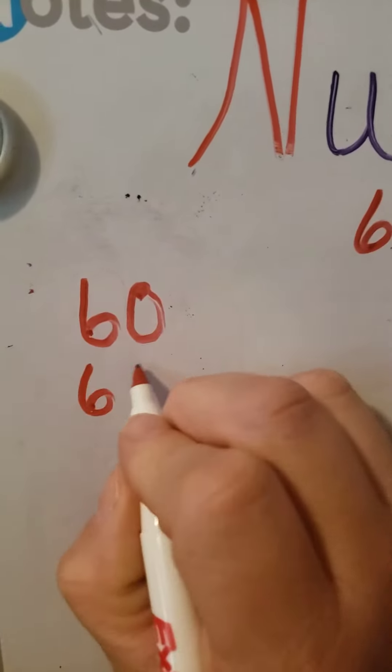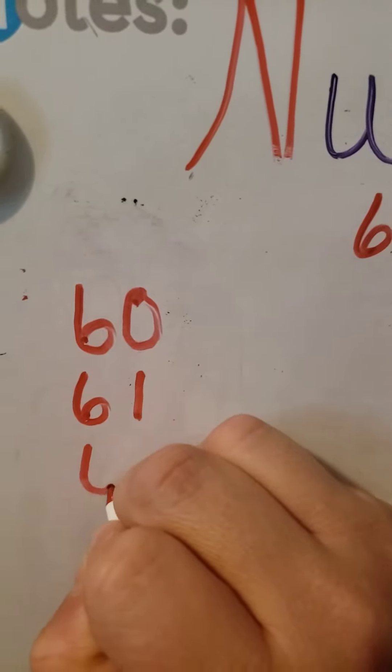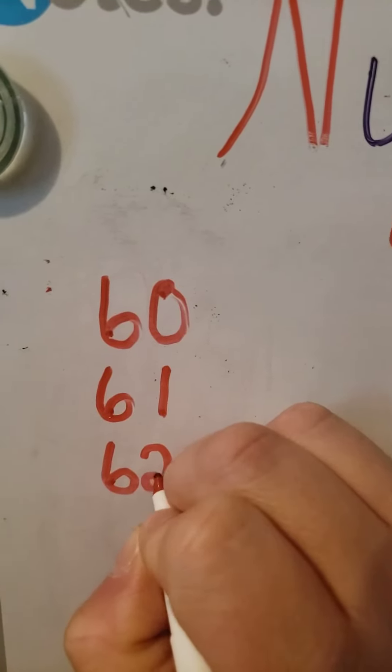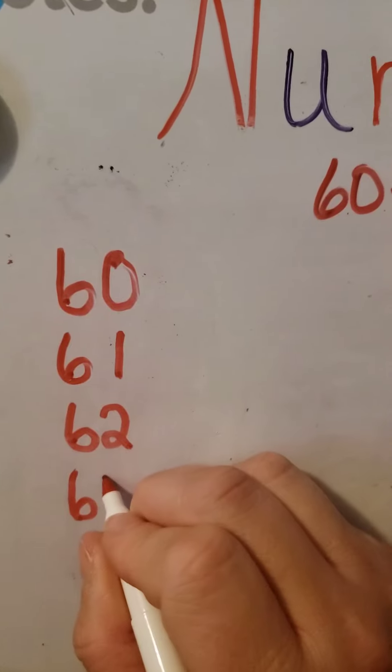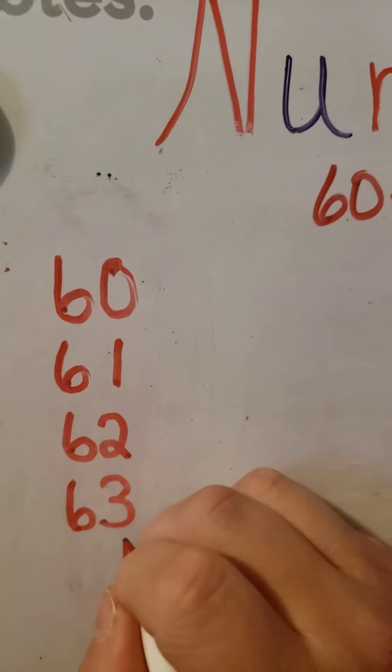61, straight line down. 62, circle at the bottom, come around this time. 63, it's two, three forks of a circle I guess.